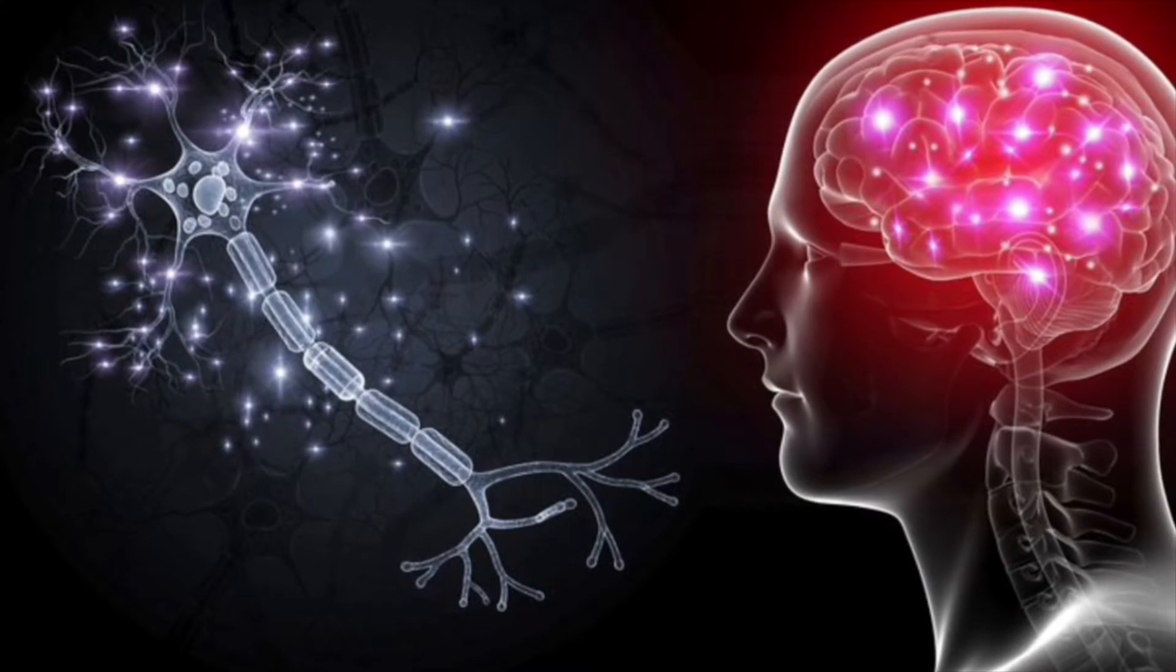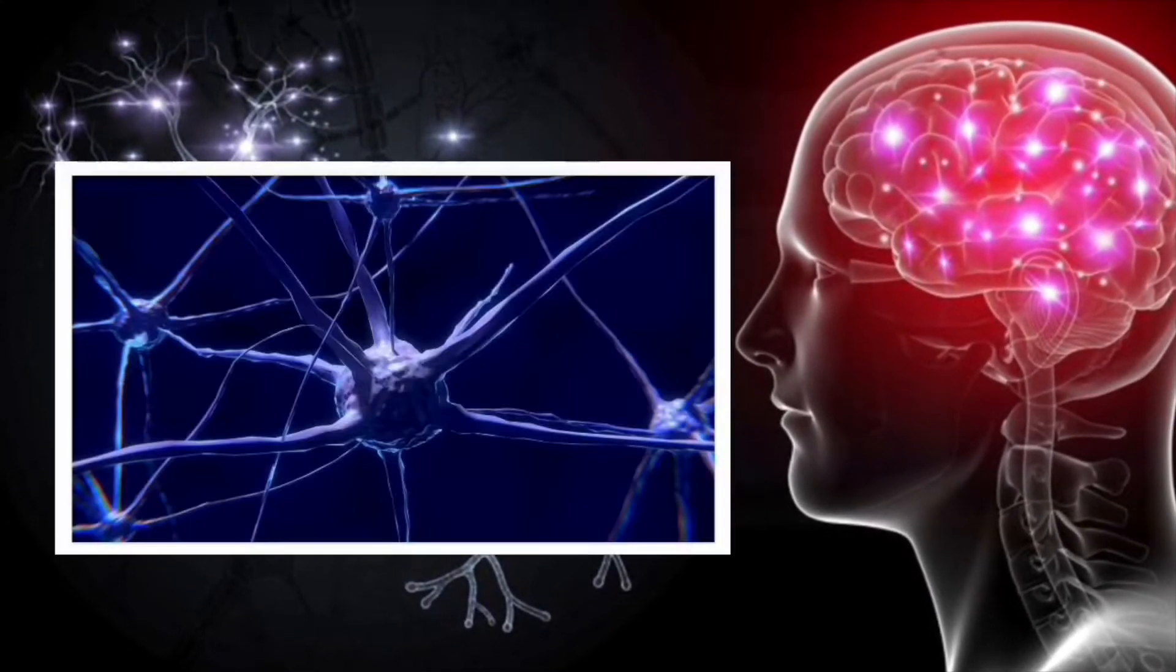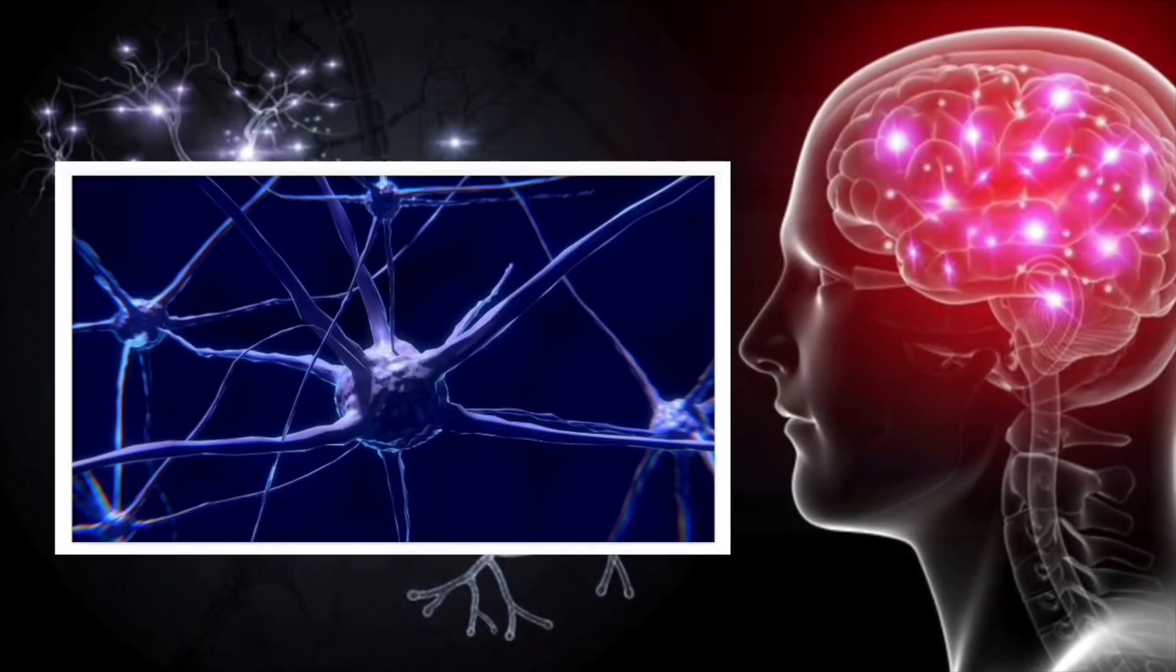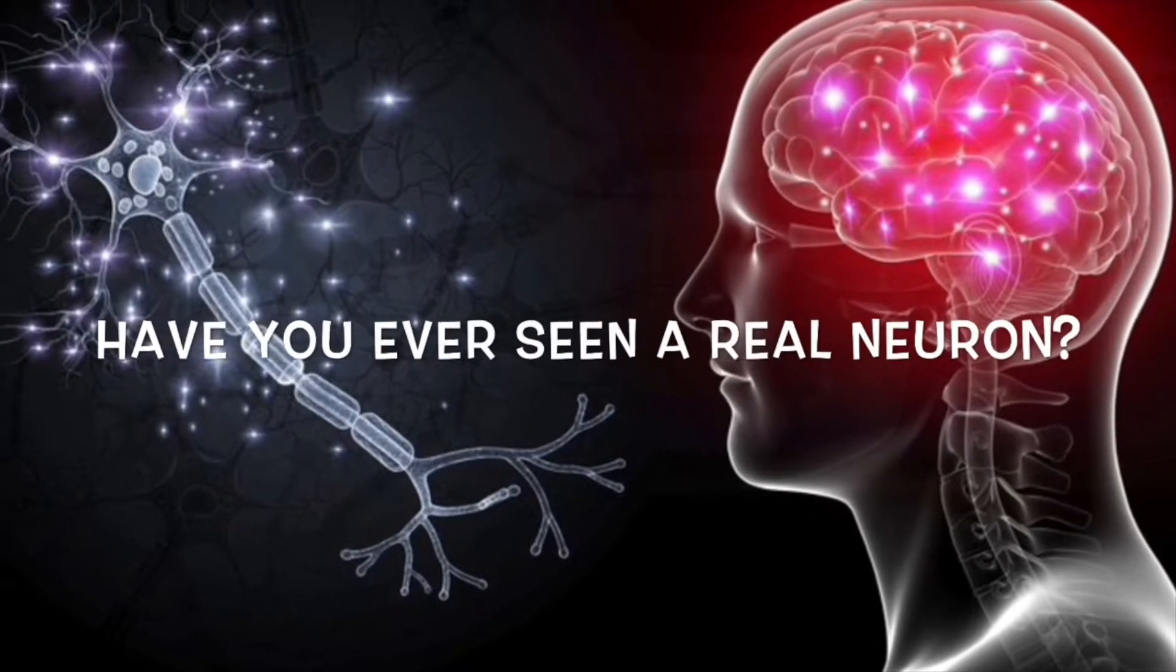The human body is made up of billions of neurons, 86 billion neurons to be exact. Neurons in size are microscopic and most people have never seen a real neuron. Have you ever seen a real neuron?